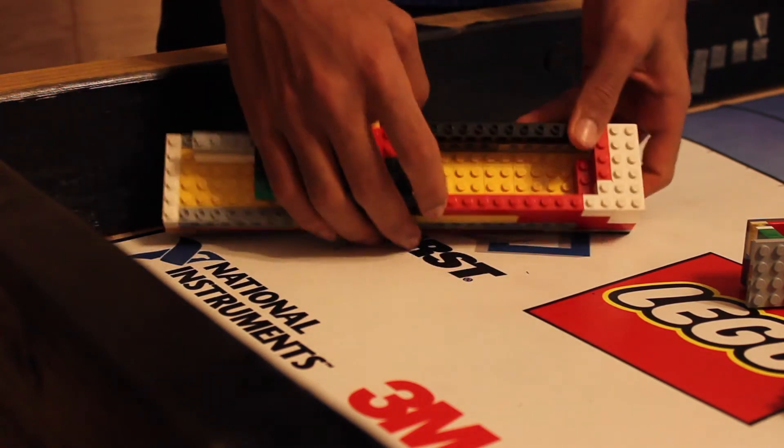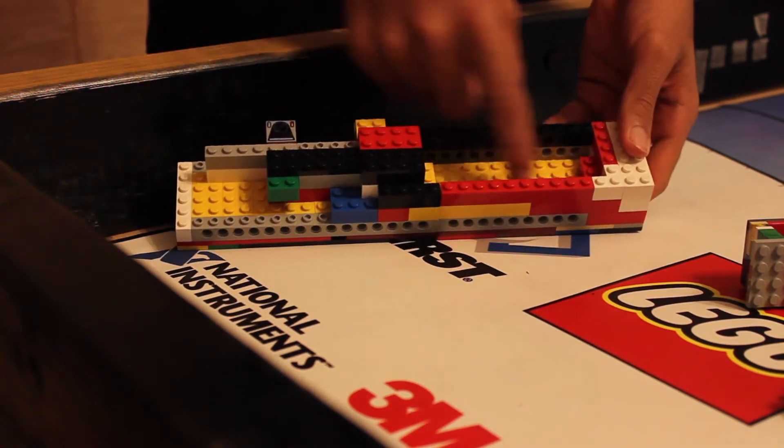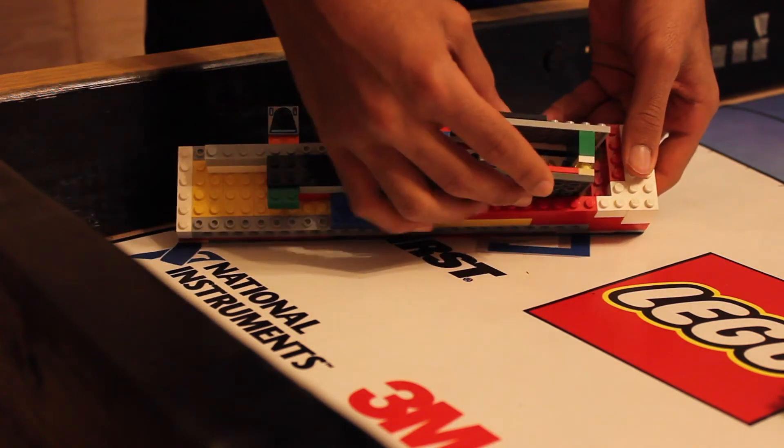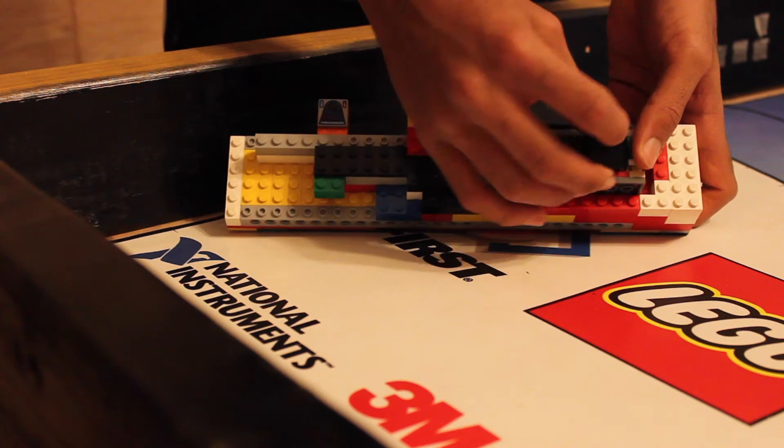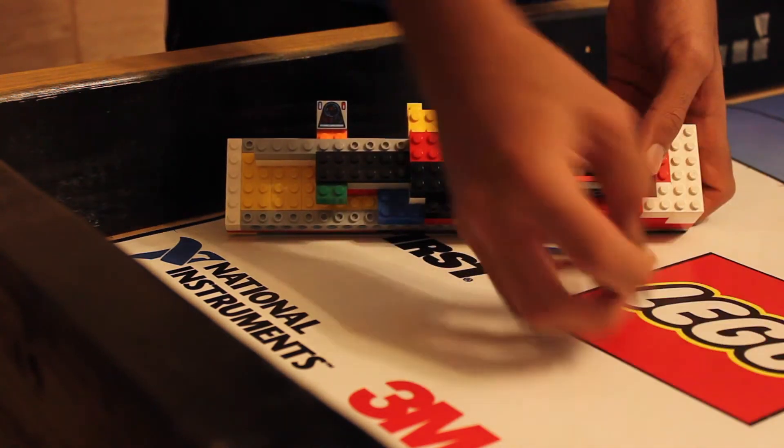As you can see, we also have a compartment. What this does is this holds this piece. And what this piece does is it holds the black pieces that we get from the demolition.